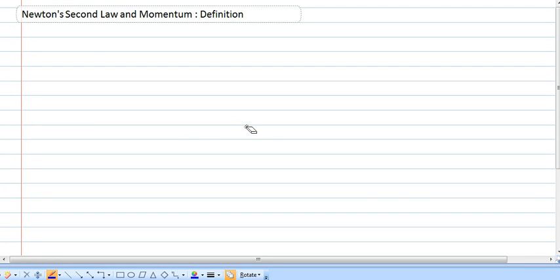Okay, hello everyone out there in physics land. Today we're going to talk about Newton's second law, which we remember is F net equals MA, and how momentum is related to it, which we remember is P equals MV.